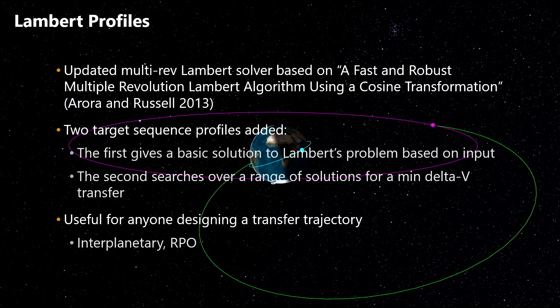Finally, we have some new Lambert profiles. We've updated our backend Lambert solver to be based on a paper by Izzo and Russell. This gives us the capability to solve for multi-revolution Lambert transfer arcs, as well as making our Lambert solver faster and more robust. We've additionally added two target sequence profiles. The first is a more basic Lambert solver where you give it the starting and ending positions and a time of flight, and it solves Lambert's problem for you. The second is a Lambert search profile where we search over all the different solutions given a range of departure and arrival times to find the best transfer with the minimum delta-V.